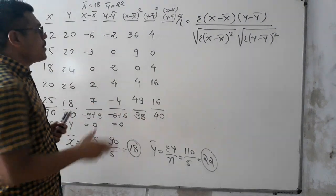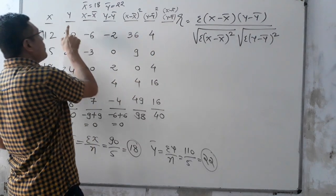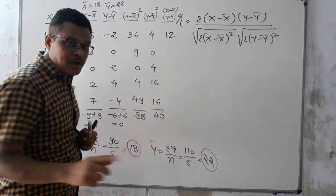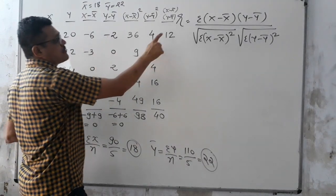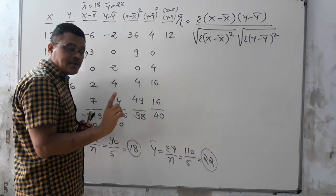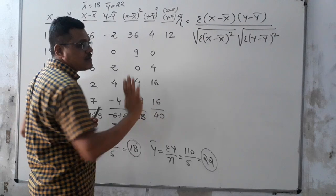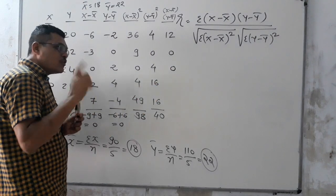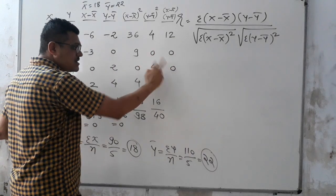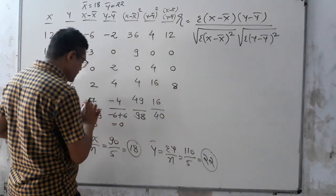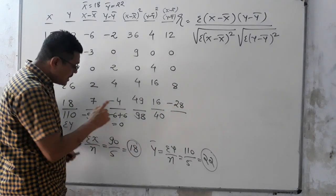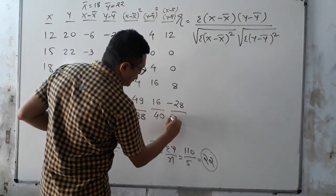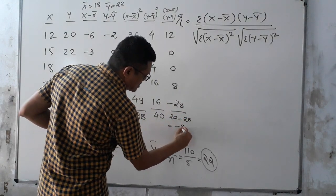In the last column, multiply (X − X̄) by (Y − Ȳ). Remember: minus times minus is plus, and plus times minus is minus. So: (−6)(−2) = +12; (−3)(0) = 0; (0)(2) = 0; (2)(4) = 8; (7)(−4) = −28. Total: 12 + 0 + 0 + 8 − 28 = 20 − 28 = −8.